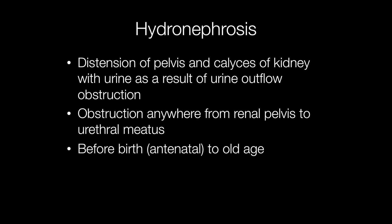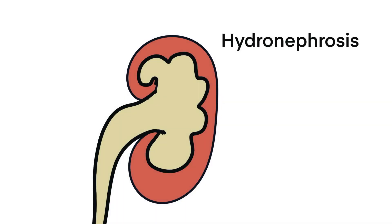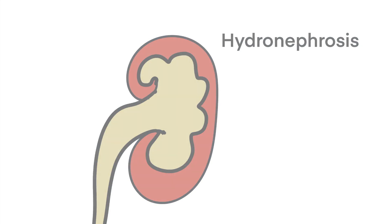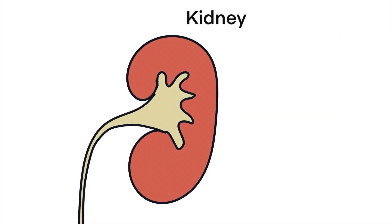Hydronephrosis may arise at any age and it may also occur antenatally — that means before birth. This is hydronephrosis with dilatation of the calyces and renal pelvis resulting in thinning of the surrounding renal parenchyma. And just for comparison here is the normal kidney again.